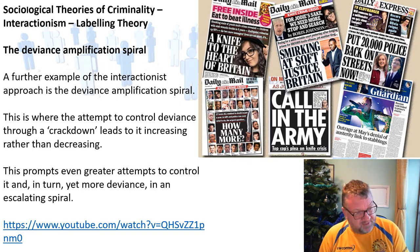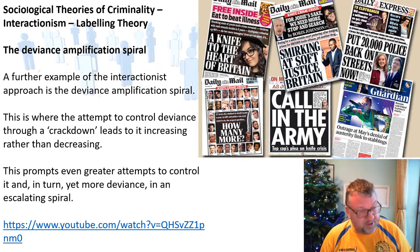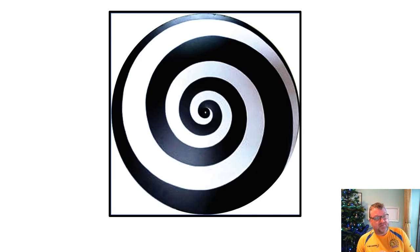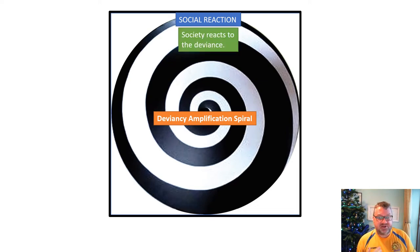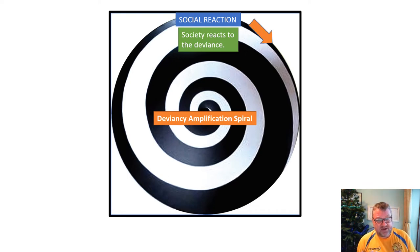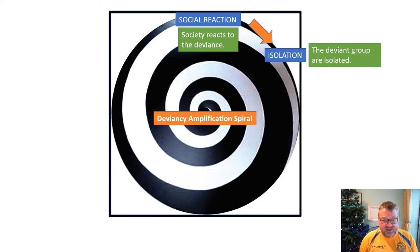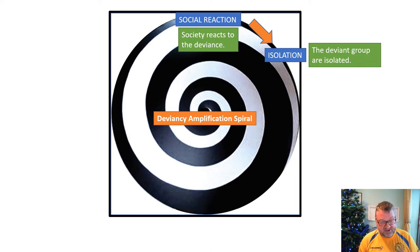Here is the deviance amplification spiral diagram. It begins with a social reaction to deviance — society reacts to the deviance within society. In turn, this leads to isolation: the deviant group feel isolated from society. Society labels them as deviant, and they start to feel they are not part of society and become isolated.